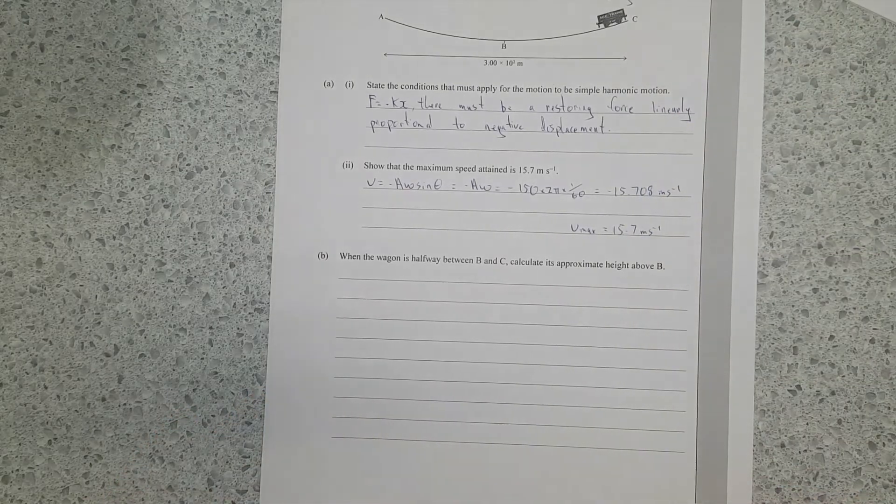Next question. When the wagon is halfway between B and C, calculate its approximate height above B. Right, so this is a bit of a tricky one. There's quite a subtle, elegant way to do it. And I'm going to go through that way, just because it uses phasor diagrams. So we're going to draw our phasor diagram.